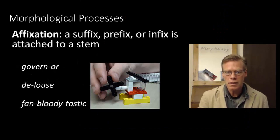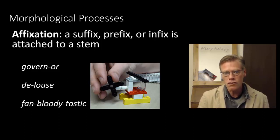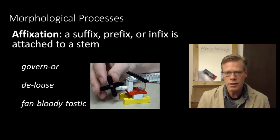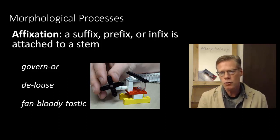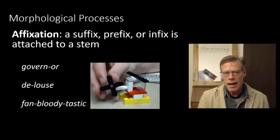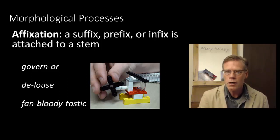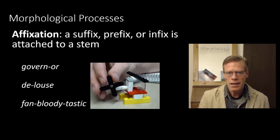One of the most common ways of changing words morphologically is to use affixes. Affixation involves suffixes, prefixes, and infixes, and there's a stem or root to which they attach. For example, you take the verb 'govern' and add '-er' to get 'governor.' Or you take 'louse' and add 'd' to it, making 'delouse.' We can even do an infix in English, although it's rare — 'fan-bloody-tastic.' Infixation is more productive in other languages, but it does exist to a small degree in English.